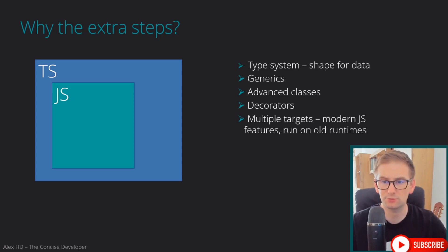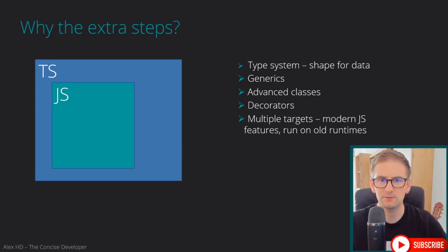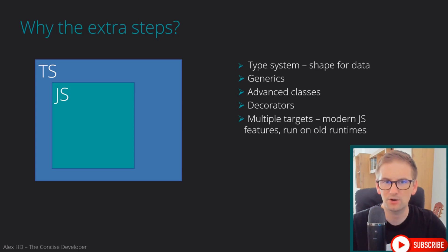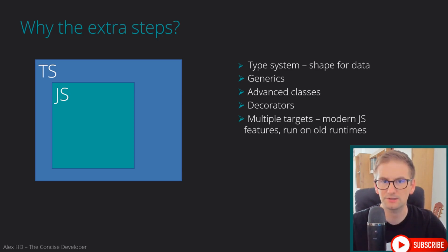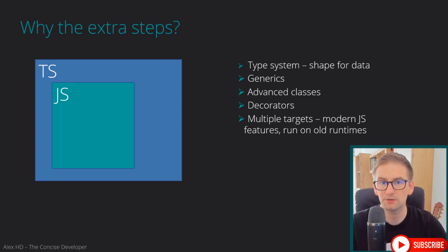Another cool feature of TypeScript is that we can compile or transpile our code into multiple targets. JavaScript and TypeScript are always evolving, meaning there are always new features being added. That's great for developers, but not so great for those who execute those programs — being the Node.js environment or, most importantly, web browsers. Web browsers don't usually keep up fast with new features. But with TypeScript, we can use the very latest features and then compile our code into older versions that can be understood by older runtimes.